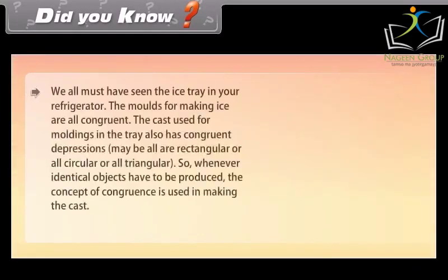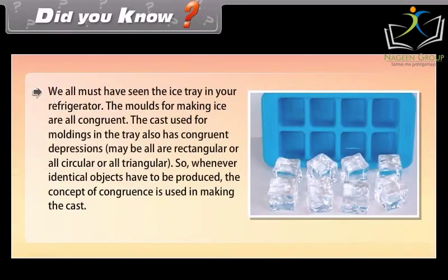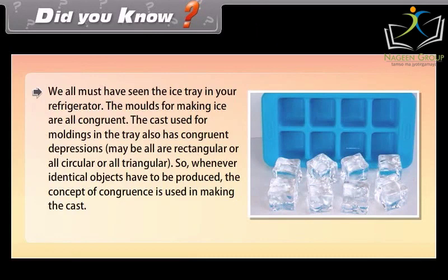Did you know? We all must have seen the ice tray in the refrigerator. Observe that the moulds for making ice are all congruent. The cast used for moulding in the tray also has congruent depressions — maybe all rectangular, all circular, or all triangular. So, whenever identical objects have to be produced, the concept of congruence is used in making the cast.